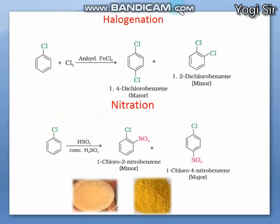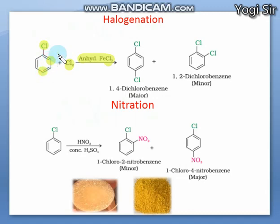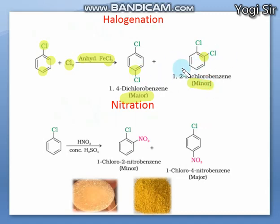In the halogenation reaction, chlorobenzene reacts with chlorine (Cl₂) in the presence of anhydrous FeCl₃ as catalyst. The electrophilic chlorine attacks the ortho and para positions, yielding a mixture of 1,2-dichlorobenzene (ortho, minor product) and 1,4-dichlorobenzene (para, major product).